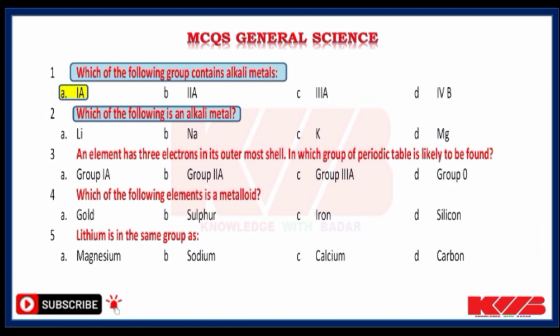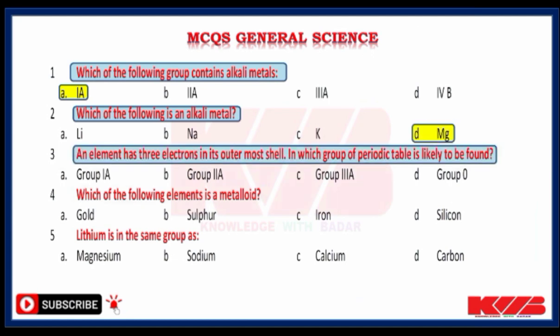Which one of the following is an alkali metal? Lithium, Sodium, Potassium or Magnesium? Magnesium. An element has 3 electrons in its outermost shell — in which group of the periodic table is it likely to be found? Group 1a, group 2a, group 3a or group 0? Yes, group 3a.